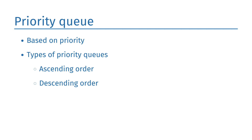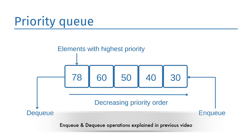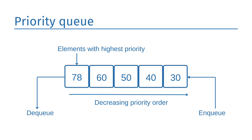Next, we will see the priority queue. The elements are arranged based on priority. If elements occur with the same priority, they will be arranged according to the FIFO principle. The priority queue is mainly used to implement CPU scheduling algorithms. There are two types of priority queues: ascending and descending priority queue. Insertion in the priority queue takes place based on arrival while deletion occurs based on priority. In the diagram, we have taken an example of decreasing priority order, and the element with the highest priority is 78.